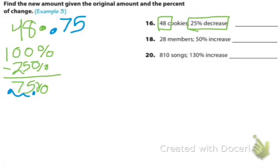So it's 48 times 0.75. So 48 times 0.75 and that gives us 36. So the answer to 16, we're looking for cookies, so 36 cookies.